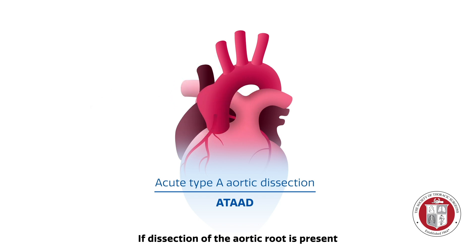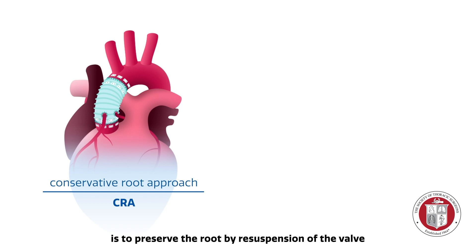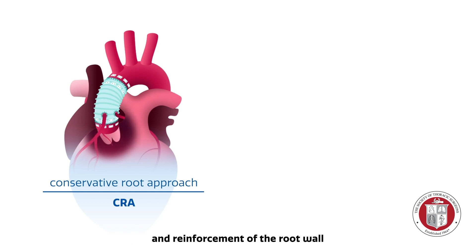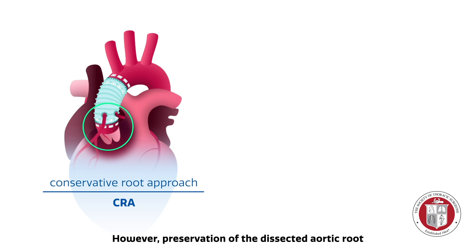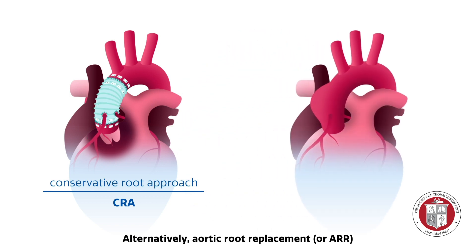If dissection of the aortic root is present, the conservative root approach, or CRA, is to preserve the root by resuspension of the valve and reinforcement of the root wall. However, preservation of the dissected aortic root is a risk factor for re-operation.